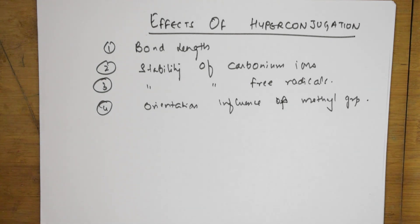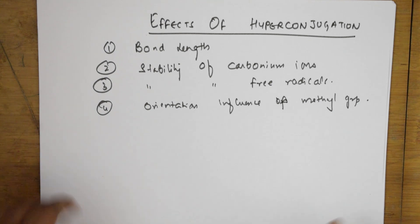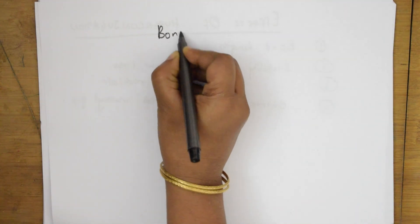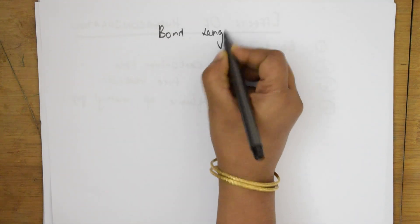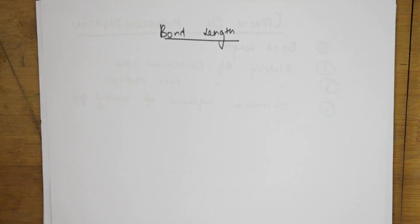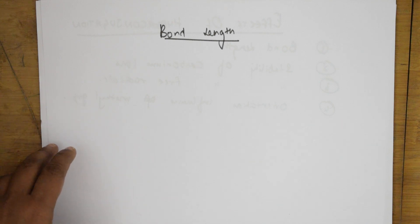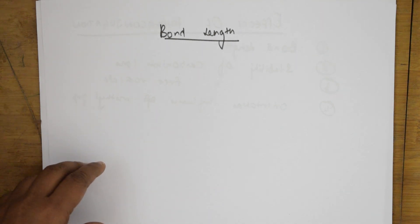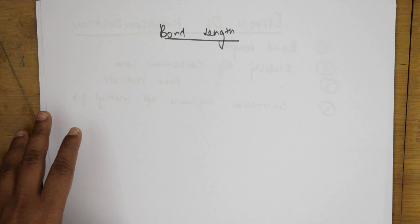Let's start with the first one — bond length. Like resonance, hyperconjugation also affects bond length. We talk about single bond length and double bond character. Like resonance, hyperconjugation also affects bond lengths because during the process the single bond in a compound acquires some double bond character.